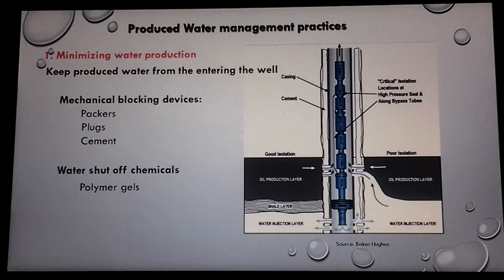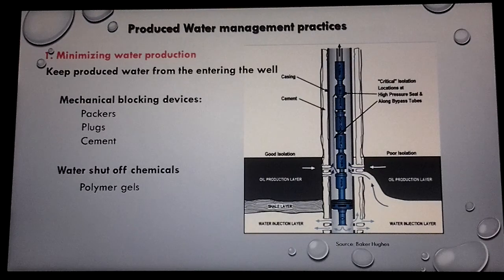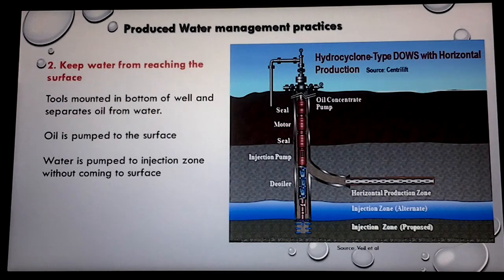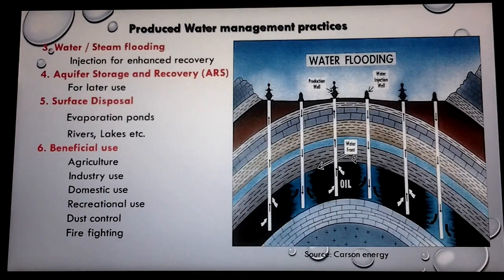The main objective of produced water management is to minimize production. They employ mechanical blocking devices and water shut-off chemicals to reduce the production of water in a particular well. There are also instances where special equipment is used to block the flow of water, so the water is separated from the oil downhole and re-injected into the formation while the oil is pumped to the surface. However, it is not always possible to prevent the production of water, so water that reaches the surface is treated and can be used for steam flooding or water flooding for enhanced recovery, or it can be treated and injected into aquifers for future use.